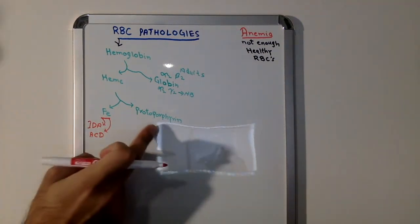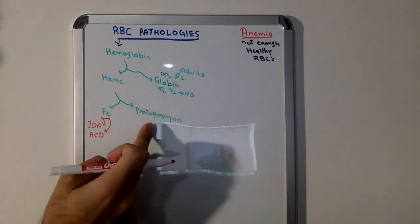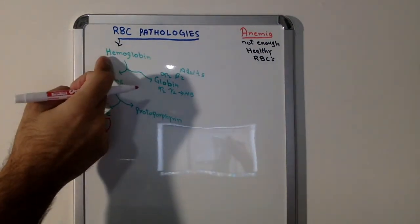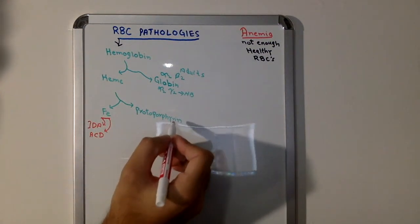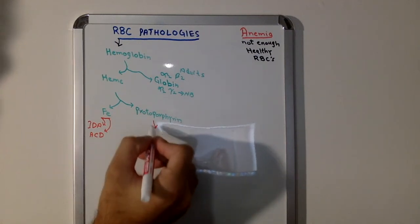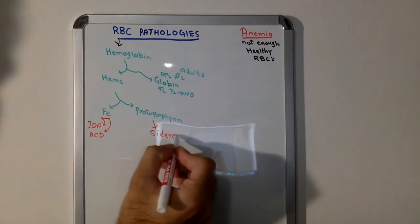Protoporphyrin, same goes here. If you have less protoporphyrin, if you don't make enough protoporphyrin, if there is any dysfunction with protoporphyrin, then a mutation, we won't make hemoglobin, we won't make healthy RBCs. If anything goes wrong with protoporphyrin, a defect in protoporphyrin, we call it sideroblastic anemia.